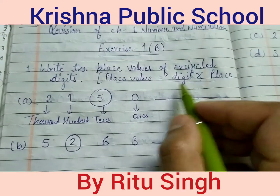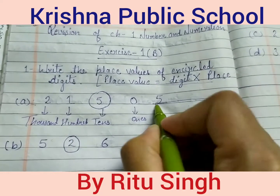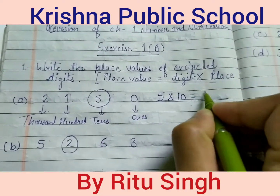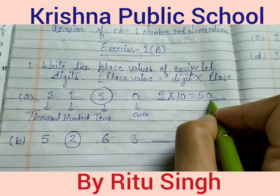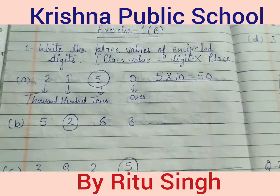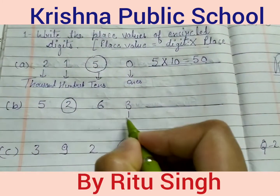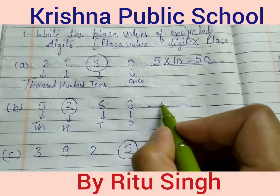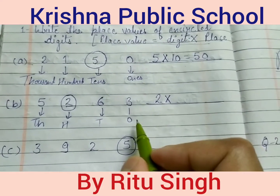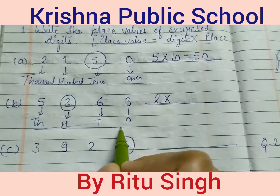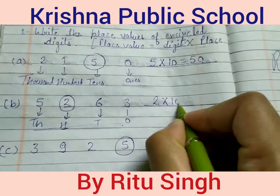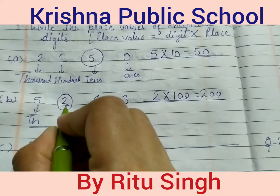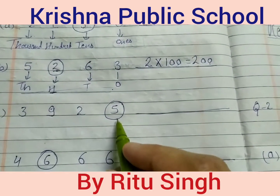First, write the digit. It means 5 into place — the place is tens. Write 10. 5 into 10 equals 50. So 50 is the place value of the digit 5. Next, similarly, write the digit 2 into its place — the place is 100. Write 100. 2 into 100 equals 200. This is the place value of digit 2.